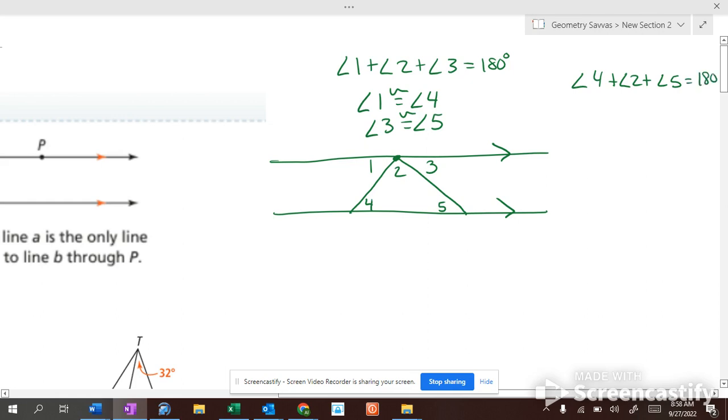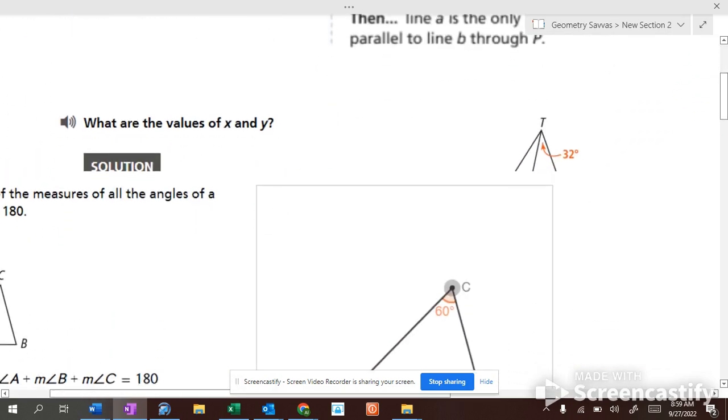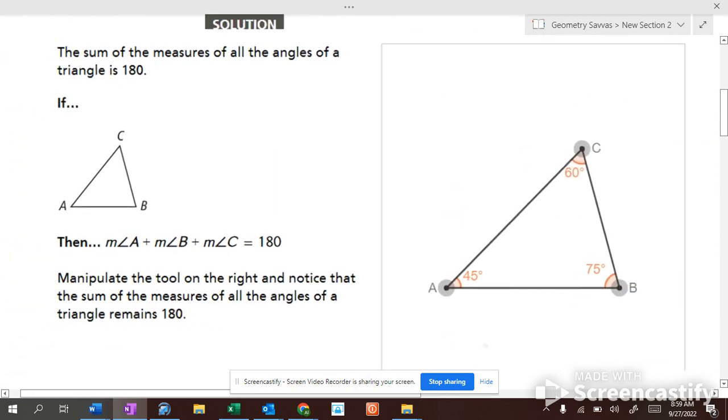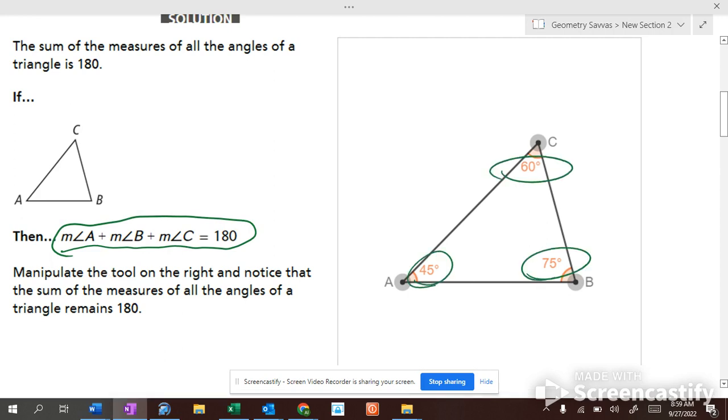180. Which proves that in a triangle, all the angles always are going to add up to 180 degrees, which is right here. Angles 1, 2, and 3 are always going to add up to 180, no matter what you do with your angles. They're always going to add up to 180 degrees.